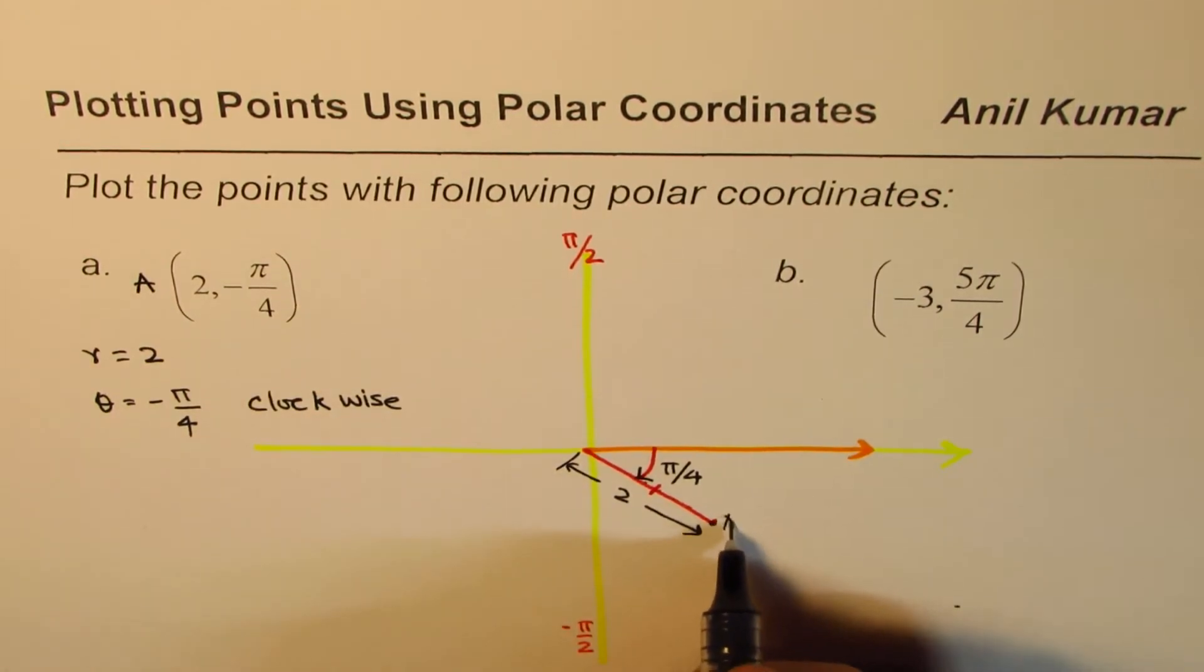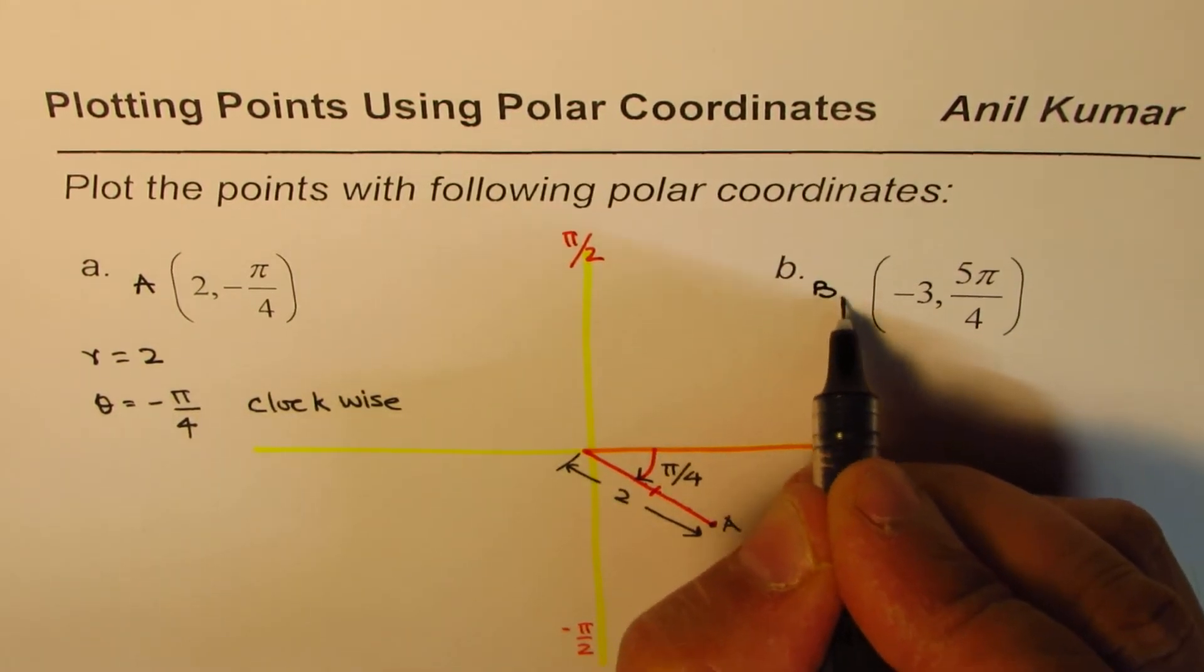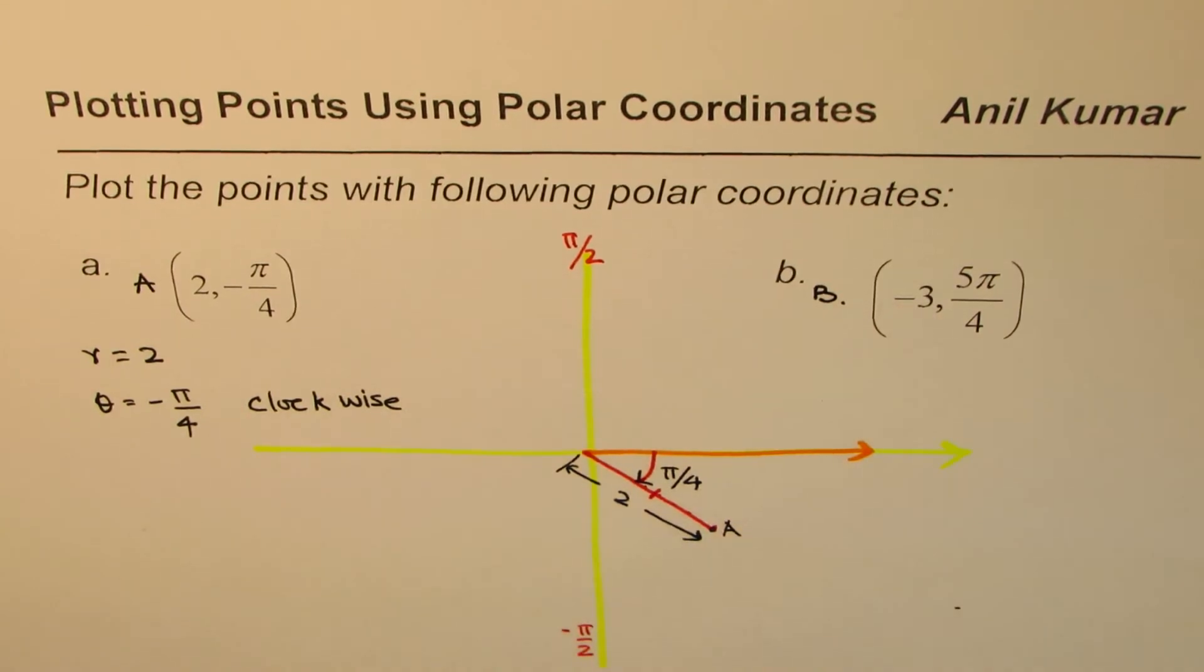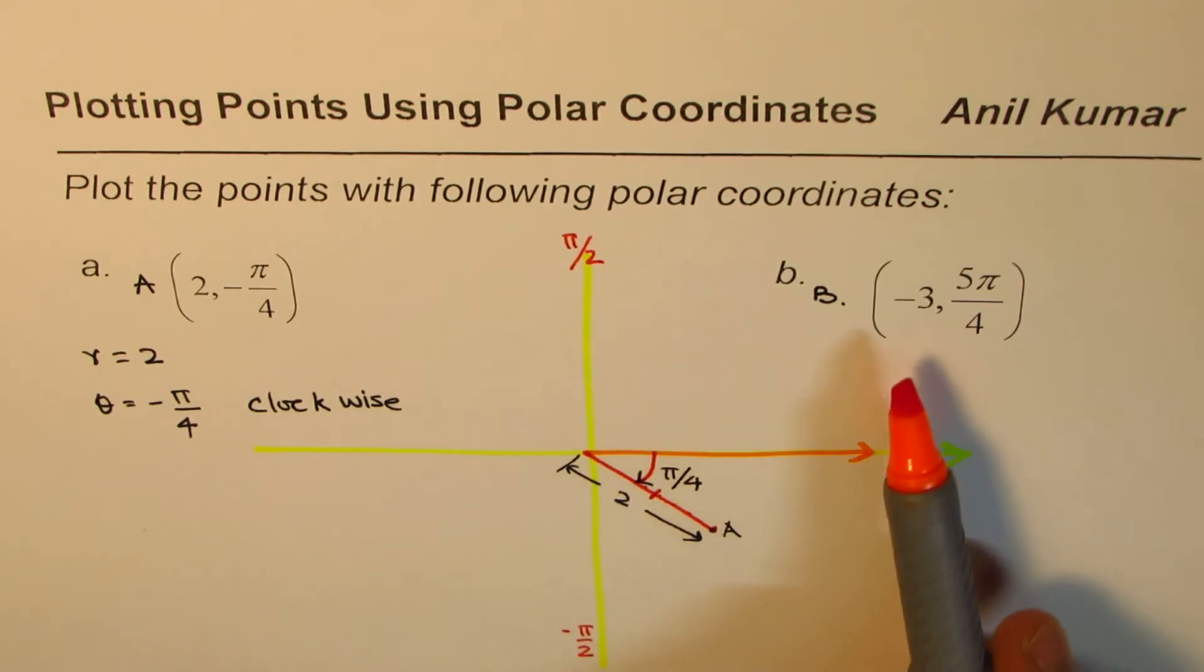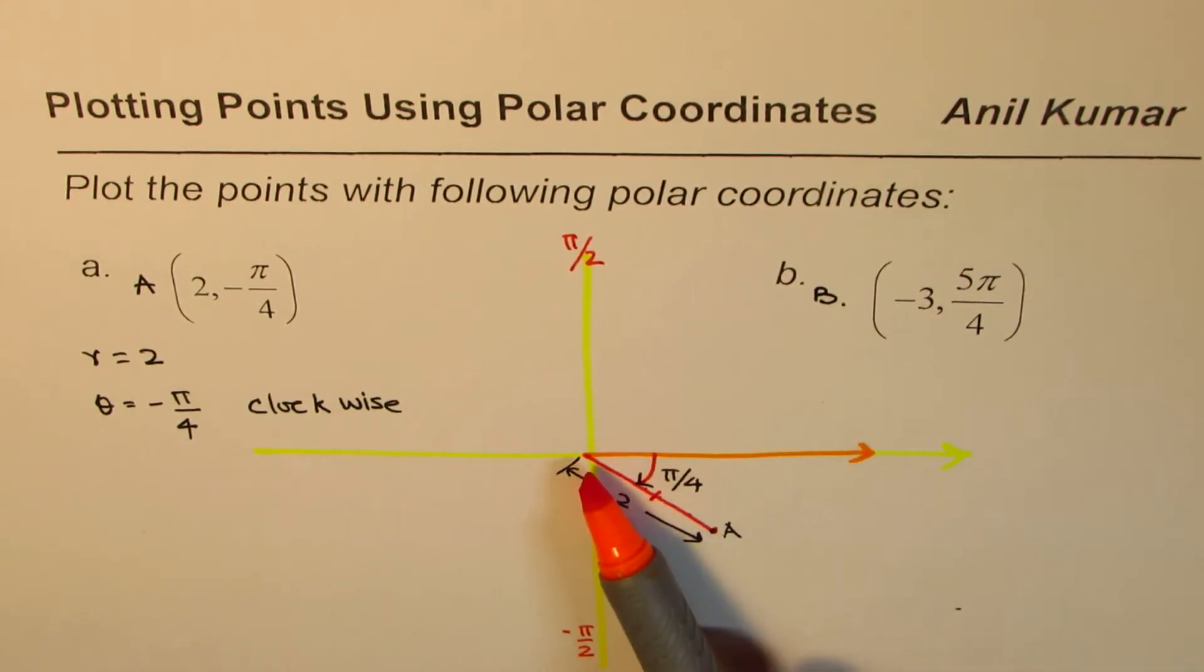Now let's look into the second point. Here we have -3 as the magnitude. Now as you know magnitude cannot be negative, so it is always positive. How to represent it on a polar coordinate?